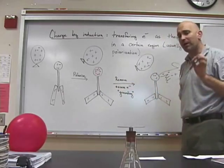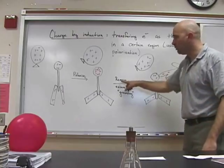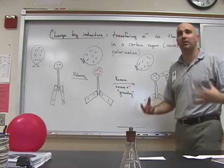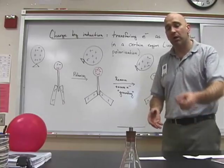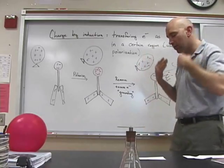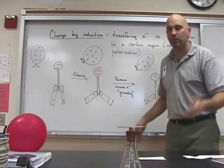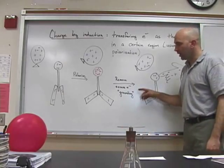By the way, vocabulary word, removing excess electrons is another word for grounding. And usually, grounding means we take electrons and we present a way to get to the ground. That's where the word comes from. And so, we need to ground the object that is charged by induction, creating a charged object.